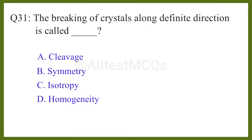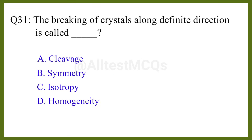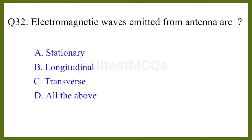Question number thirty-one: The breaking of crystals along a dependent direction is called the correct answer is option A: cleavage. Question number thirty-two: Electromagnetic waves emitted from an antenna are the correct answer is option C.